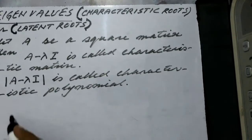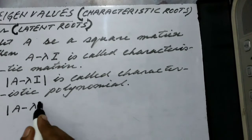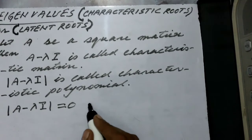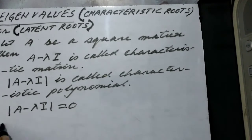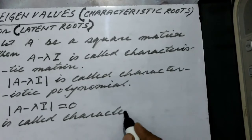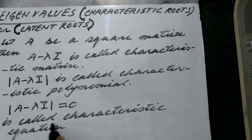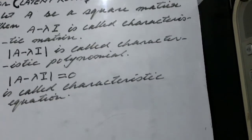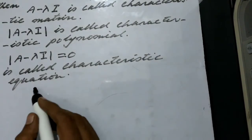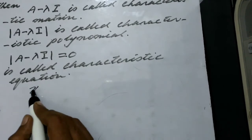If we equate this characteristic polynomial to zero, the resulting equation is called the characteristic equation. The roots of this characteristic equation are called latent roots, characteristic roots, or eigenvalues.